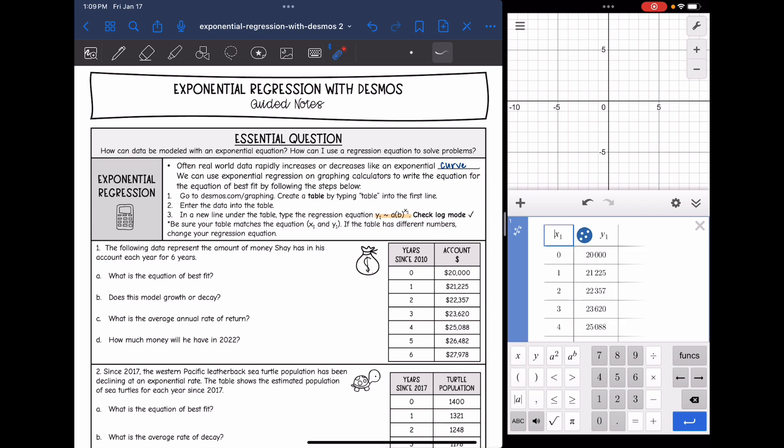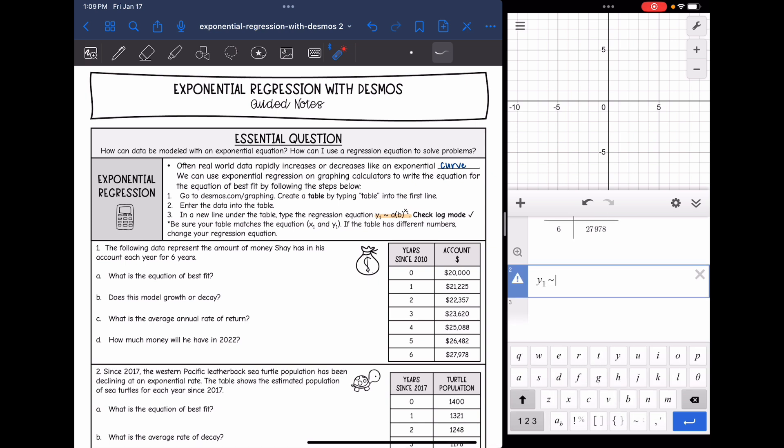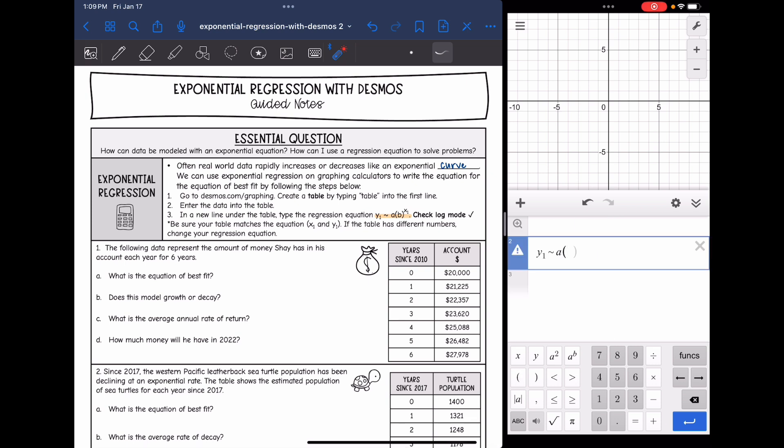Since my X values and Y values in the table were labeled with A1, we're going to do Y1 is about A times B to the X1. Let me put that parentheses in there. There we go. To the X1. OK, then make sure you check log mode or your equation will not be correct. OK, and here is our equation of best fit.